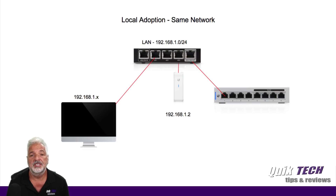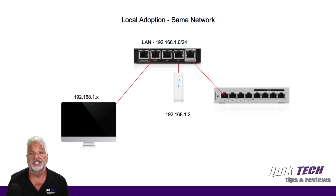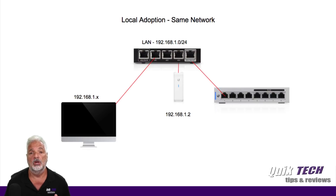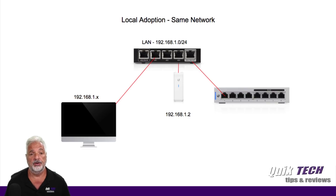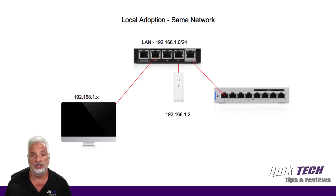In this first example, we're talking about local adoption, which basically means all of the devices are on the same local network as the UniFi controller. You can see in the diagram the router, the computer, and the controller are all on a 192 network.